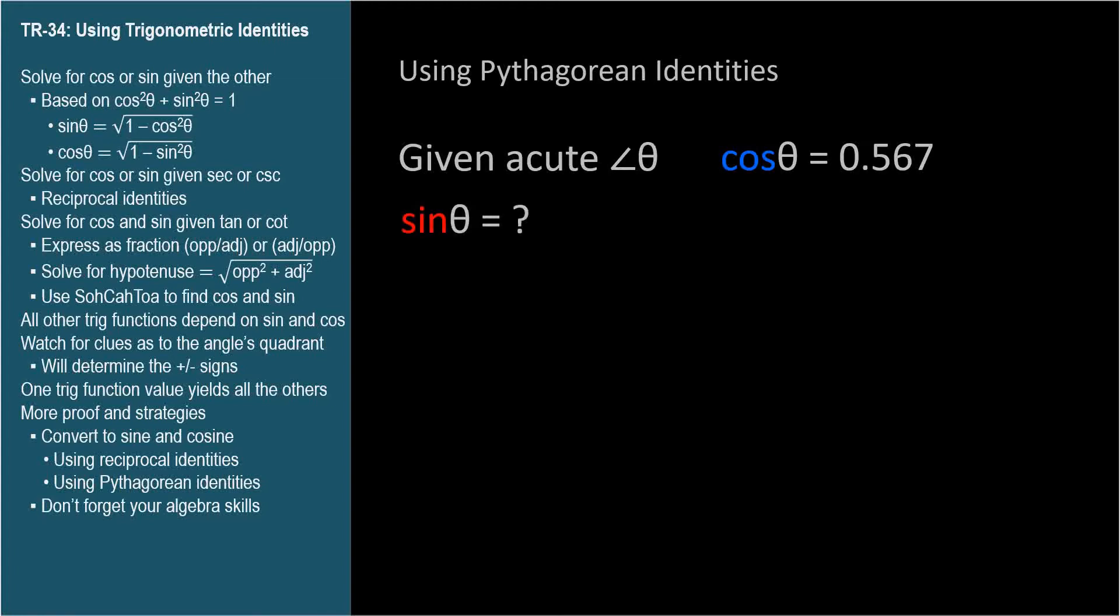Well, we could find the arc cosine of 0.567 and then take the sine of the resulting angle, but we're going to use the Pythagorean identity.